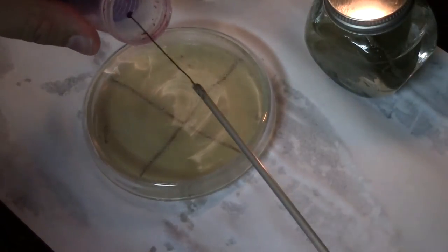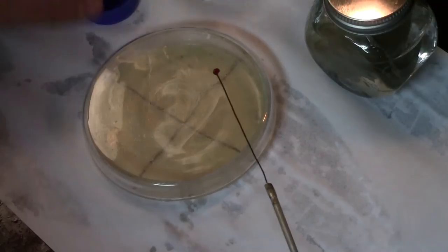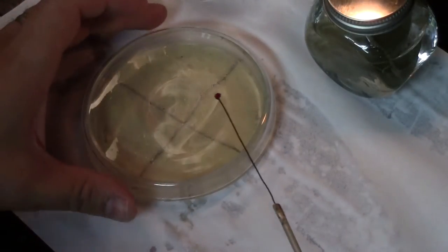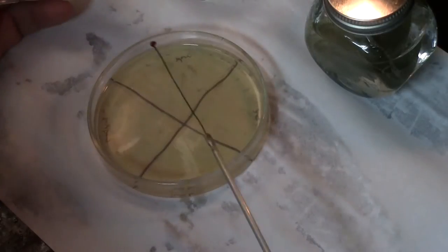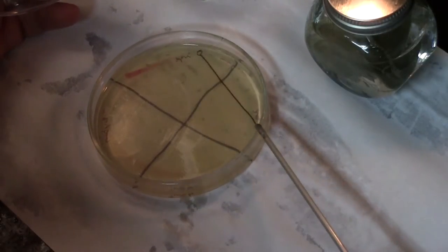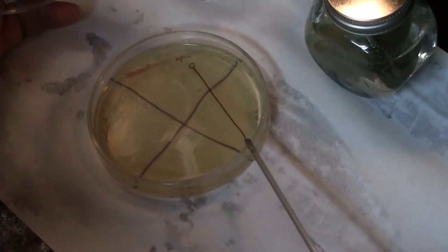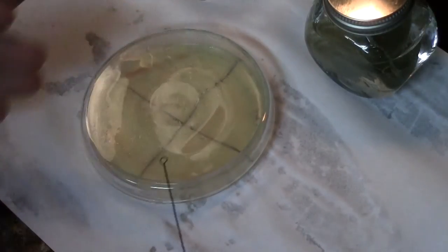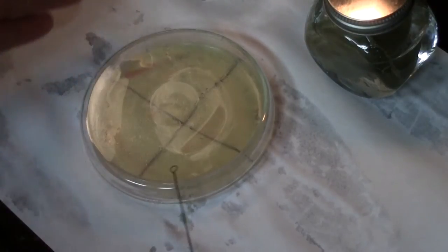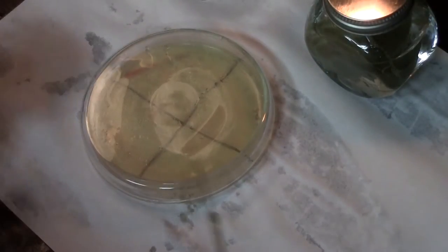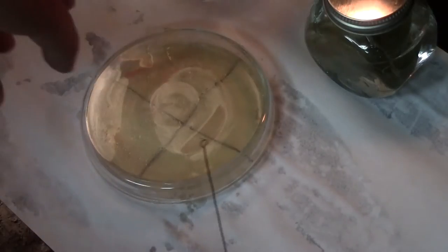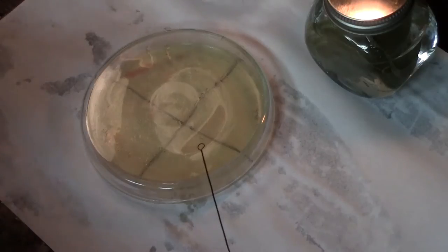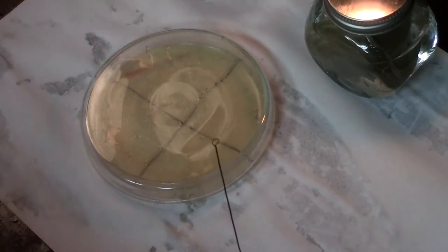And I'm just going to collect a loop full of in this case the yeast from the grapes. Now what I'm going to do is on my plate is I'm going to streak it across and I'm just going to streak in a continuous motion the entire inside surface of that wedge. And what that should do is sort of continually dilute out the yeast. So somewhere near the center, somewhere around in here, I should end up with a pure strain of yeast.